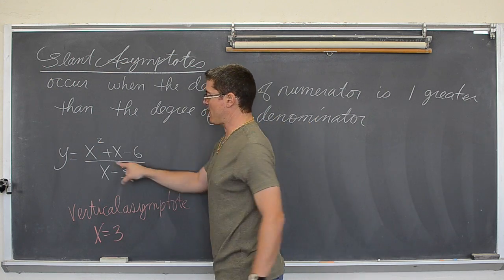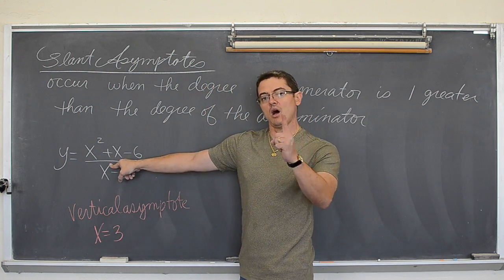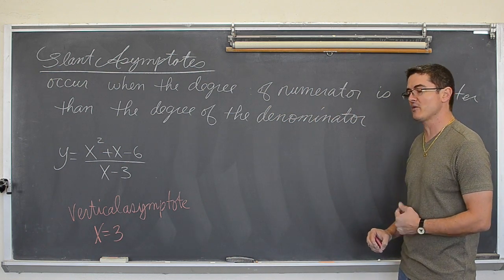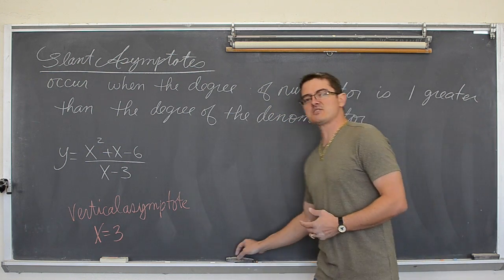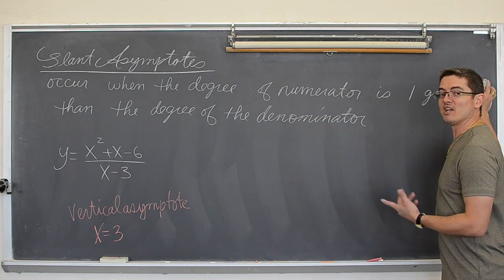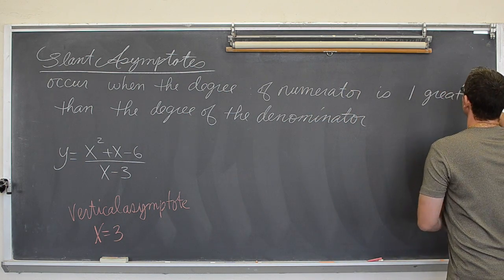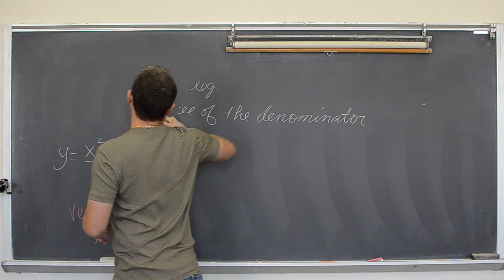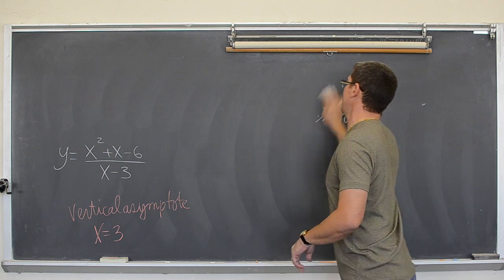But because the top degree is larger than the bottom degree by one, there is also a slant asymptote. So let's try and figure that out. Have you watched the video lately called long division? Well, if you have, we are going to do it again. So that is how you find slant asymptotes. You find slant asymptotes through division.